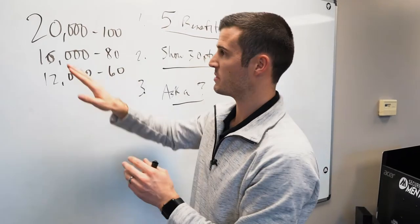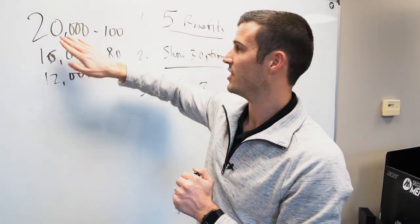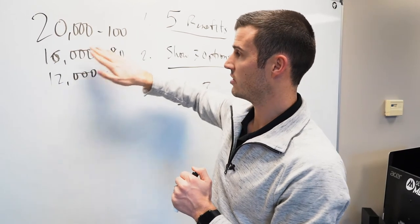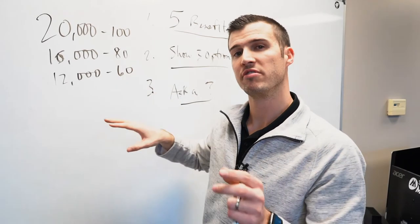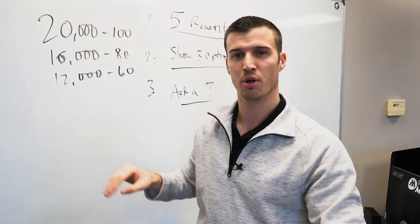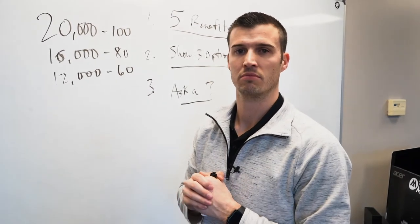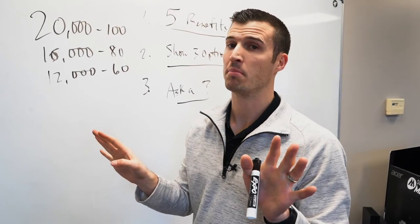So I'll turn them over. All right, Miss Betty, here's the three options. $20,000 for $100,000, $16,000 for $80,000, or $12,000 for $60,000. Which of those three makes the most sense to you? And then I shut up until they speak.